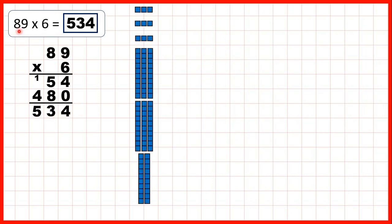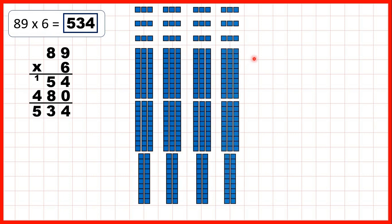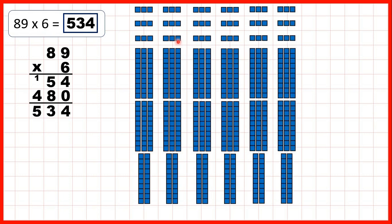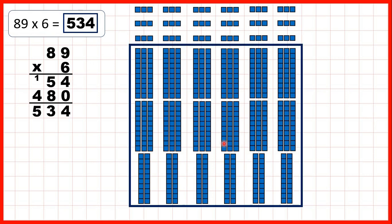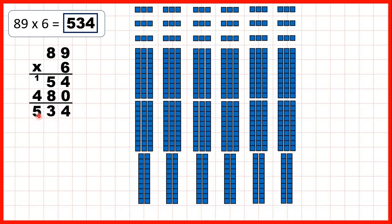Then we had 89 — so that's 8 tens and 9 ones — and we were multiplying by 6, so let's show that six times. On top here we have 54 ones counters, and below we have 48 tens counters, so that's 480. Putting those together gives us 534 as our answer.